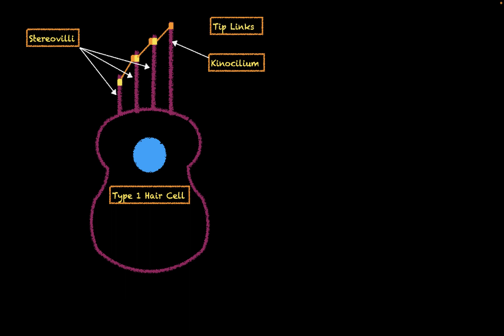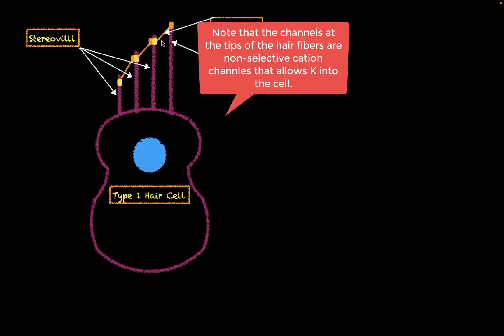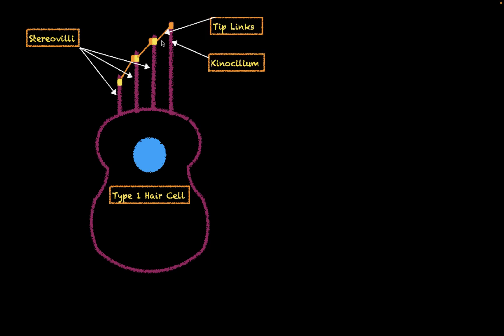Another important part of the hair cell is going to be the tip links, which are proteins that connect these hair fibers together. On each hair fiber, you basically have a channel — represented by a yellow rectangle — which is a potassium channel that allows potassium to flow into the cell. These particular potassium channels are mechanically gated.